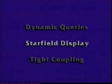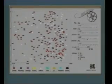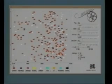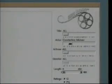Our solution to the film finder problem depends on three concepts: dynamic queries, star field display, and tight coupling to organize the user's actions. We begin with an overview, zoom in on areas of interest, and then can select details on demand. Thank you very much.